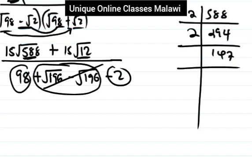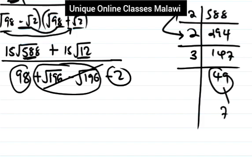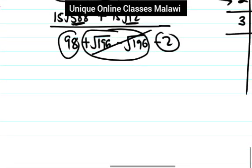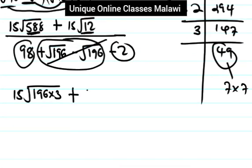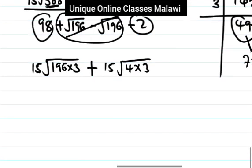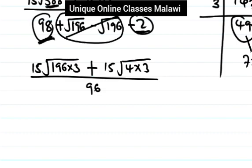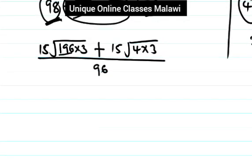You see, we have 49 there. This number is a perfect square. So we can get 7 times 7. Now 4 times 49 gives 196. So 4 times 49 is 196. With 196, you can take the square root. Then we have 15 here, plus the root of 196 times 3. Here, divide by 3 — that level gives 96.